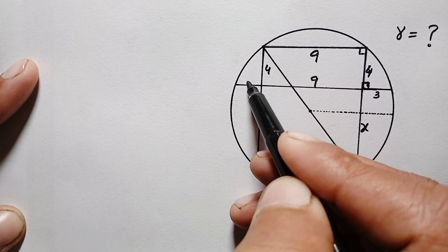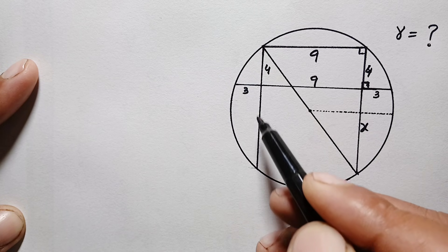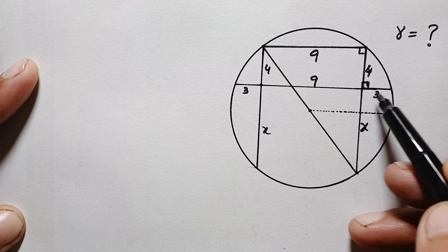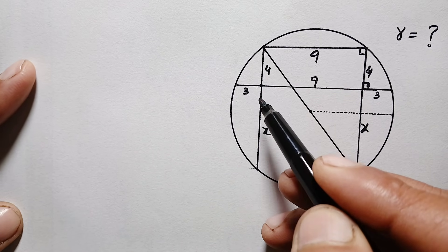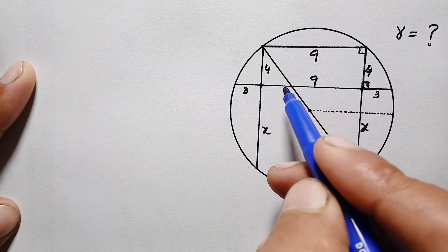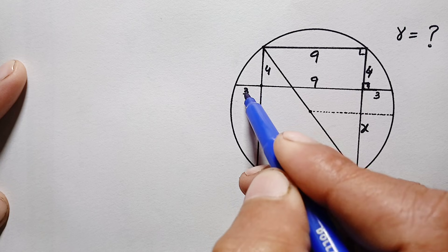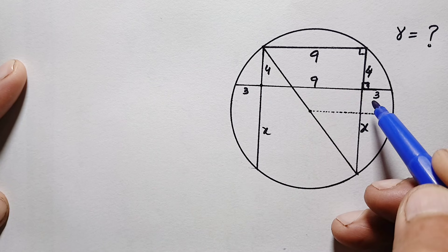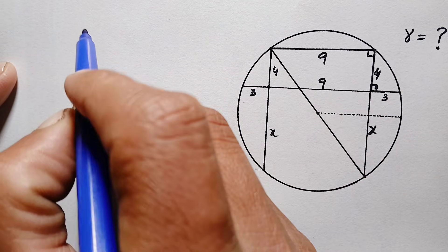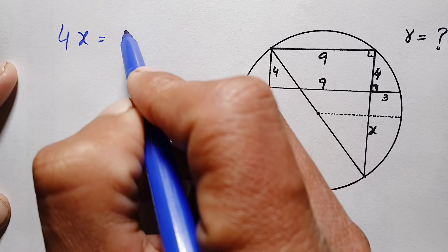Our target is to find the value of x. Here we have two chords intersecting at one point, so using the intersecting chords theorem — the product of two segments of one chord equals the product of two segments of the second chord. This segment is three units and the total segment is nine plus three which is twelve units. The other chord has segments four and x, so we write: four times x equals three times twelve.